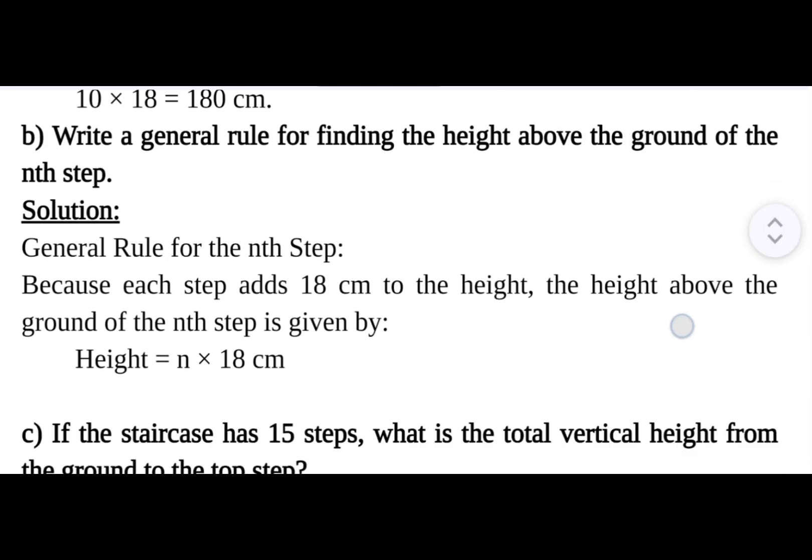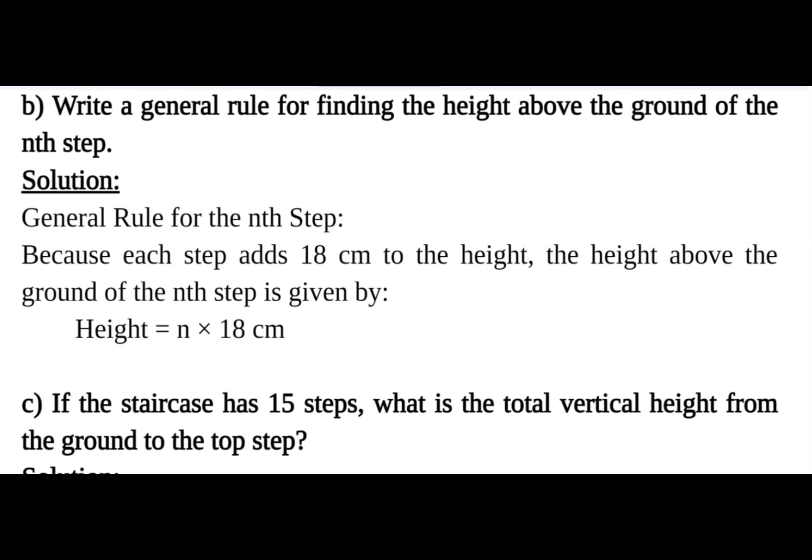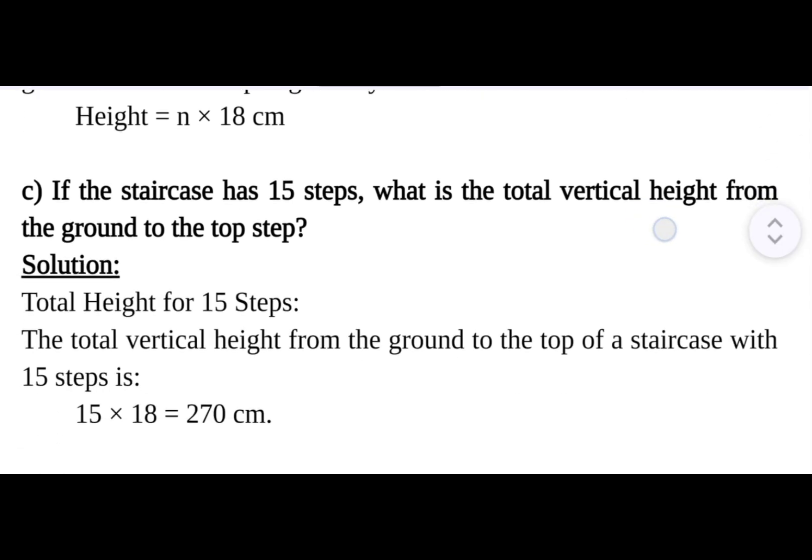Next question: If the staircase has 15 steps, what is the total vertical height from the ground to the top step? Solution - Total height for 15 steps: The vertical height from the ground to the top of a staircase with 15 steps is, where n = 15, so n × 18 = 15 × 18 = 270 centimeters.